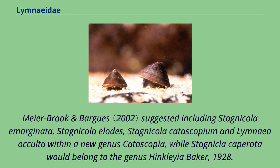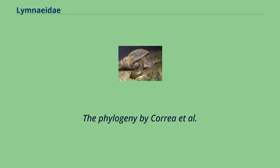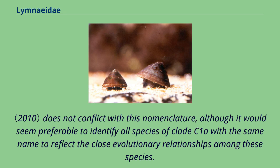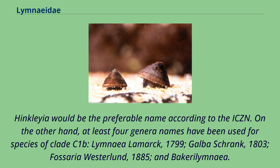Meyerbrook and Barguese suggested including Stagnicola marginata, Stagnicola elodes, Stagnicola catascopeum, and Limnia occulta within a new genus Catascopia, while Stagnicola caperata would belong to the genus Hinckleya Baker, 1928. The phylogeny by Coria et al. does not conflict with this nomenclature, although it would seem preferable to identify all species of clade C1a with the same name to reflect the close evolutionary relationships among these species. Hinckleya would be the preferable name according to the ICZN.